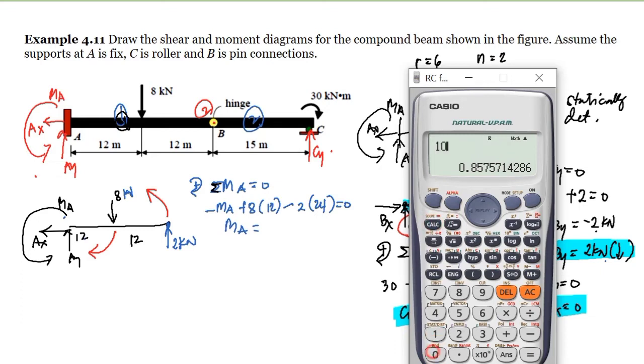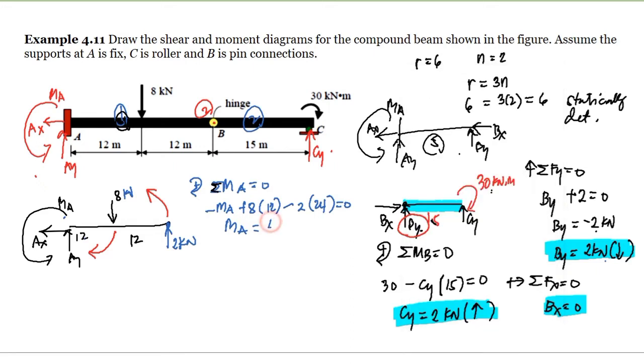Solving, the moment at A equals 48 kilonewton meter. Since the result is positive, our assumption that moment at A is counterclockwise is correct. We note that moment at A is counterclockwise.